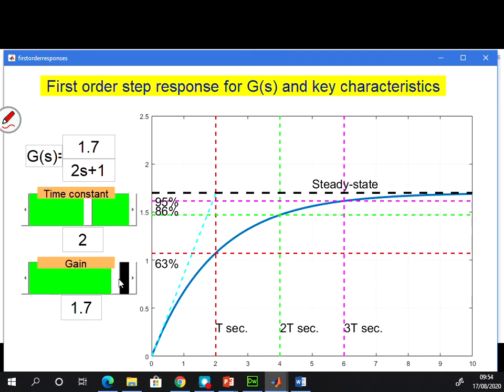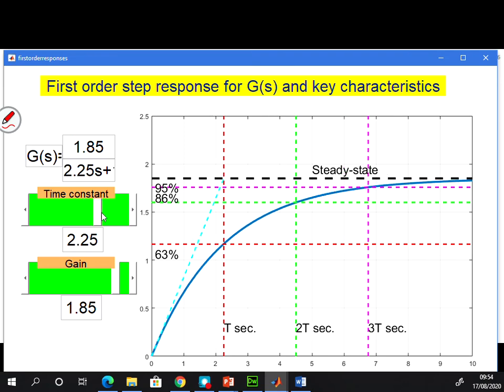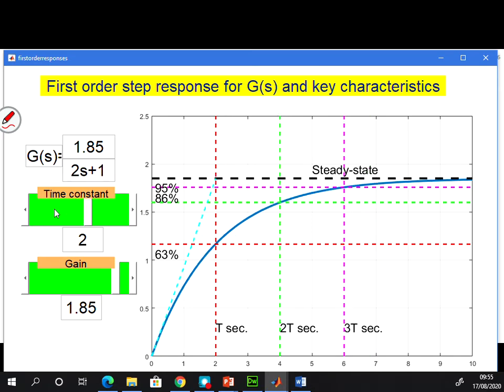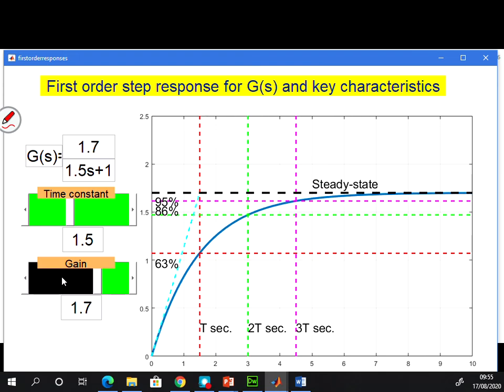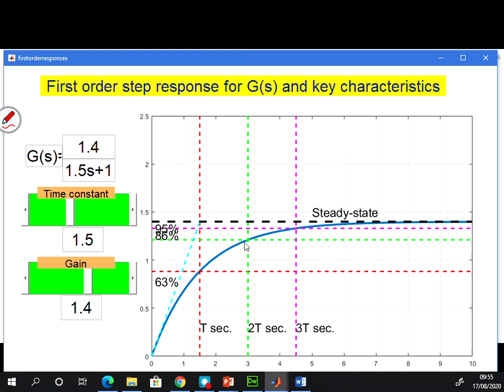But the key thing to look at in all these responses is there are some points which are consistent. So the response always goes through this horizontal line which says 63% and this vertical line which says T. It goes through there. It goes through the horizontal line 86% and the vertical line 2T. It goes through the horizontal line 95% and the vertical line 3T. So no matter what I do with the time constant and the gain, my response always goes through those three points. So that gives you some insight as to what we're looking for. These parameters time constant and gain are clearly very significant.